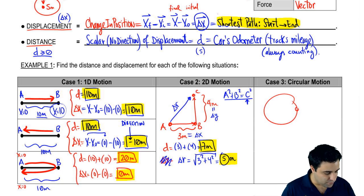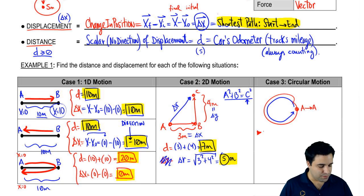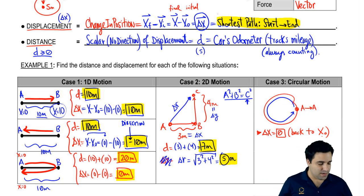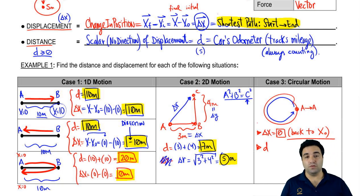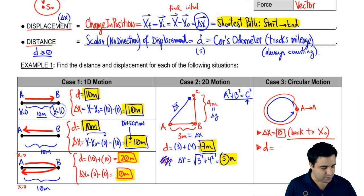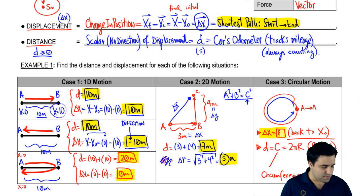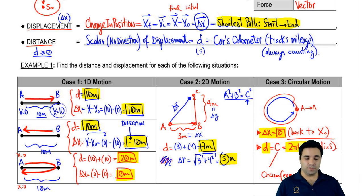In the last case — circular motion — if you go around a circle from point A back to point A, your displacement is zero because you're back to your initial position. Your position didn't change from start to end. But your distance is always counting — so if you're moving, you have a distance. In this case it's the circumference of the circle, given by two pi R, where R is the radius. Once again, these numbers are very different from each other, so you have to be careful with the distinction between displacement and distance. Hopefully this made things a bit clearer — and that's it for now.